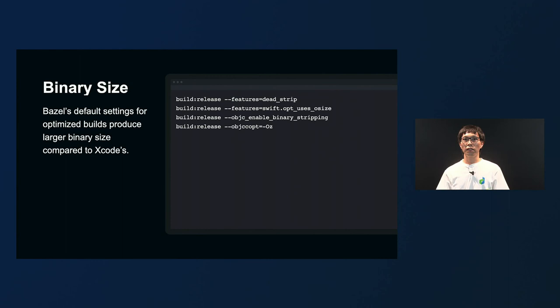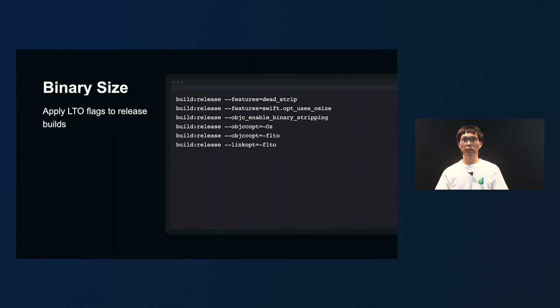After migration to Bazel, how much change did we see in binary size? Unfortunately, the binary size is not optimized even with Bazel's default release build settings. By default, a larger binary is generated compared to the one built on Xcode. In LINE iOS release builds, we add specific options to optimize the size. Furthermore, if you add the link time optimization (LTO) flag, you can optimize the size at link time. However, if you use this option, the link time will increase tenfold, so make sure you apply this flag to release builds only.